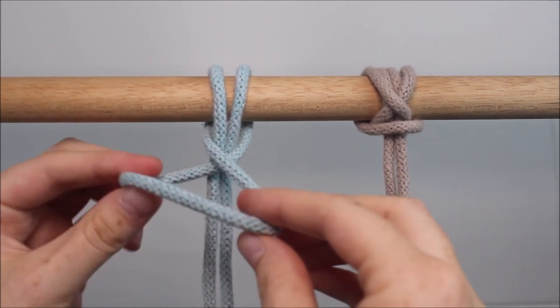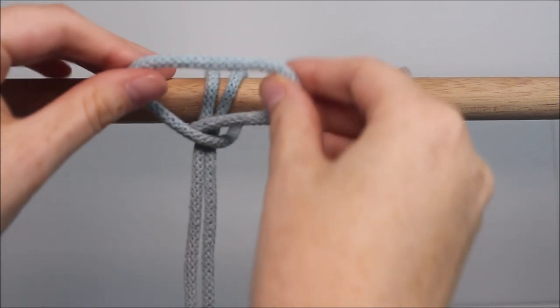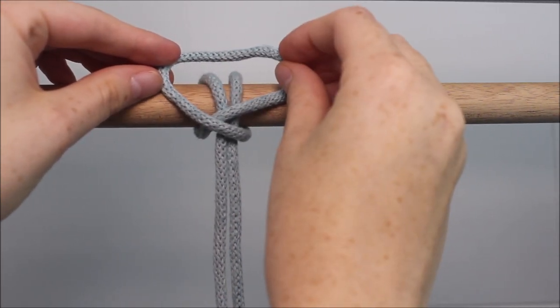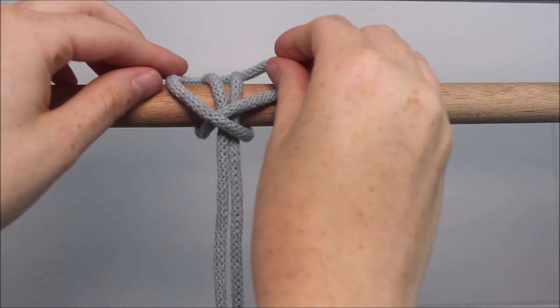Now, take that folded loop, while it's still folded, back over the dowel rod. And make sure the two ropes on your dowel rod are between the loop.